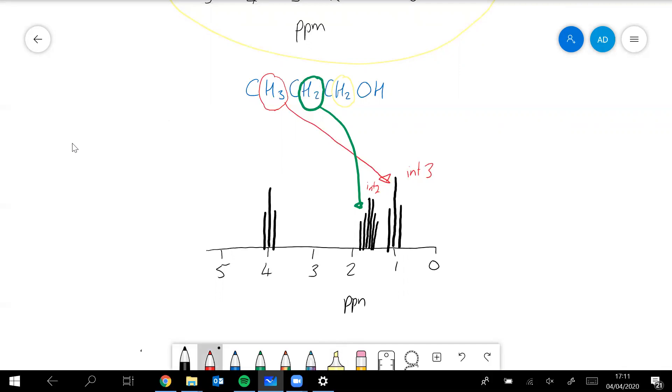And then finally we've got our OH. The OH will probably give us about ppm five, and it's going to be a singlet with an integrated value of one.